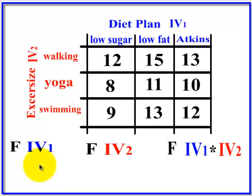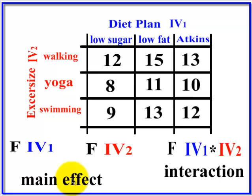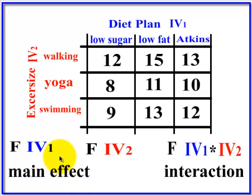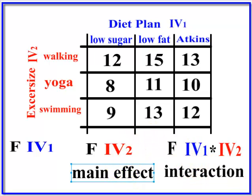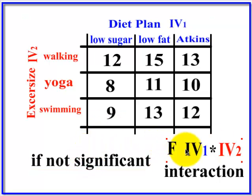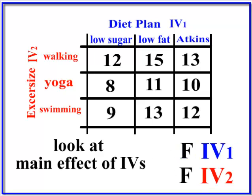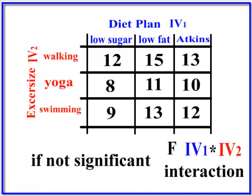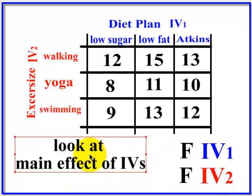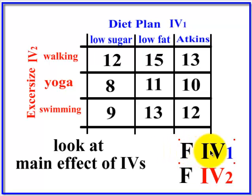So: omnibus F first. If you get an omnibus F, you have the options of looking at the main effect and the interaction. The main effect is just IV1, just the diet plan — was there a significant difference just between the diet plans? Was there a significant difference between the exercises? And then, was there a significant interaction between the two? If the interaction was not significant — in other words, your F was small and the P value was large — then you're supposed to go ahead and look at the main effects of the IVs. So you're just looking at the F scores or significance values of the diet plan and the exercise.